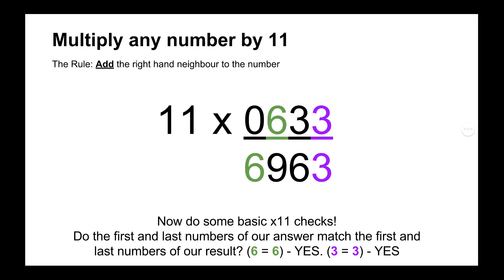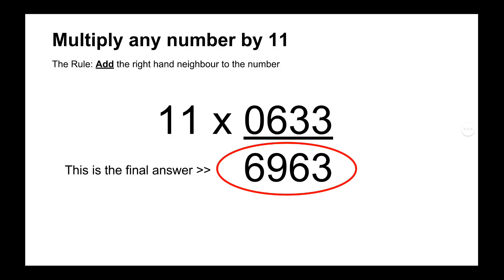Now we can do a couple of checks to make sure that we carried out the first and last calculations correctly, and that is for number 11 and number 11 only, is to make sure that those digits are the same. In which case 6 and 6 are the same and 3 and 3 are the same. And there's our answer, 6,963.